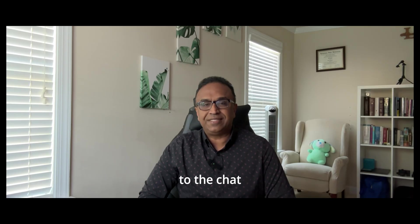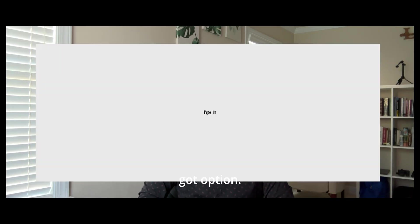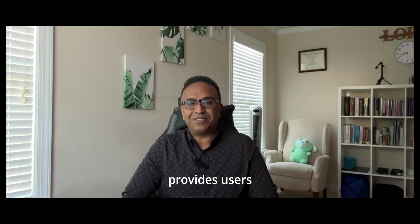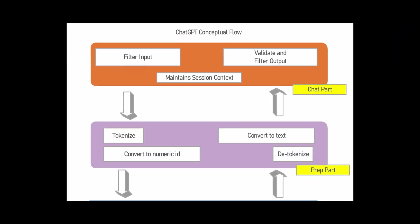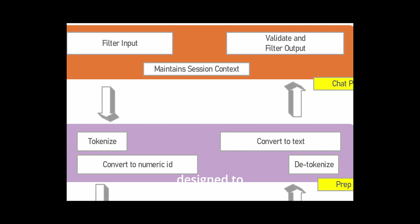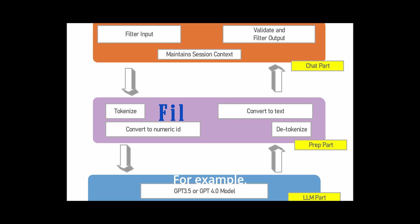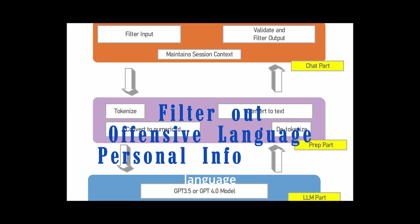When it comes to the chat part, you have options. You can simply type in questions or use an API to talk to the system. This flexible approach provides users with convenient options. The chat part also has an inherent mechanism designed to filter out specific types of questions, such as offensive language or personal information, ensuring an appropriate conversational experience.